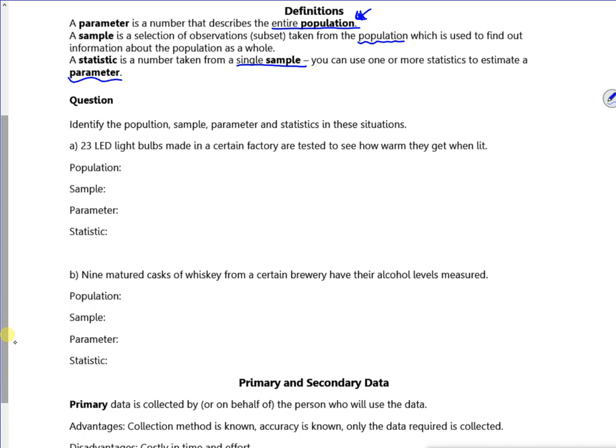So the population is all of the light bulbs in the factory. They might make thousands, hundreds of thousands a day. That's the population. The sample is the 23 of them.